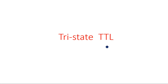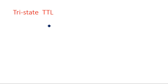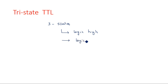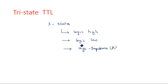Hi everyone, in this video I'm going to explain about tri-state TTL. Tri-state TTL is quite important and interesting to study. Tri-state means it has three states: one is logic high, the second one is logic low, and the third state is high impedance state.